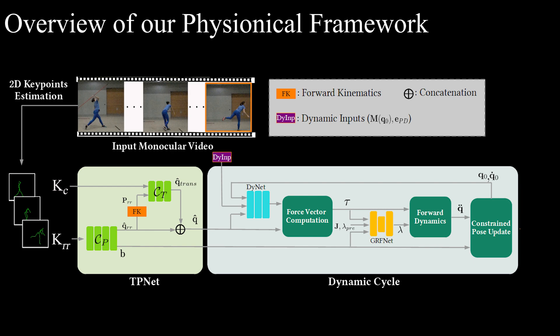The outputs of TP net are fed to the dynamic cycle, in which we first compute an internal force vector based on the neural PD controller. We then estimate the ground reaction force by a neural network, GRF net. The estimated forces are further sent to the forward dynamics module, where physics laws are used to convert the forces to root and joint accelerations. Lastly, we update the 3D pose using the estimated accelerations in the constraint pose update module. Here, we introduce a custom differentiable network layer, where foot-floor penetration is prevented with a hard constraint.